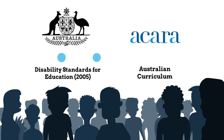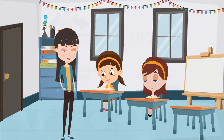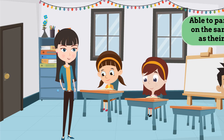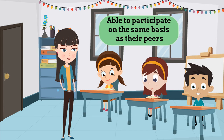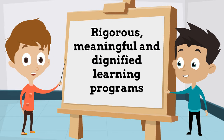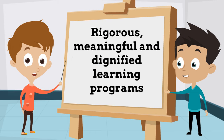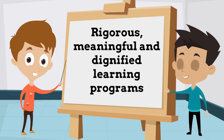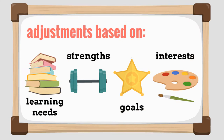Under the Disability Standards for Education, in direct alignment with the Australian curriculum, it is our obligation as educators to ensure students with learning difficulties are able to participate in learning experiences on the same basis as their peers. This encompasses increasing students' access to rigorous, meaningful and dignified learning programmes that are adjusted to meet their individual learning needs, strengths, goals and interests.